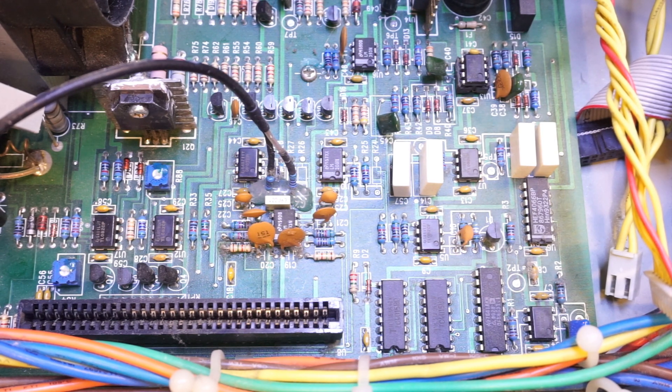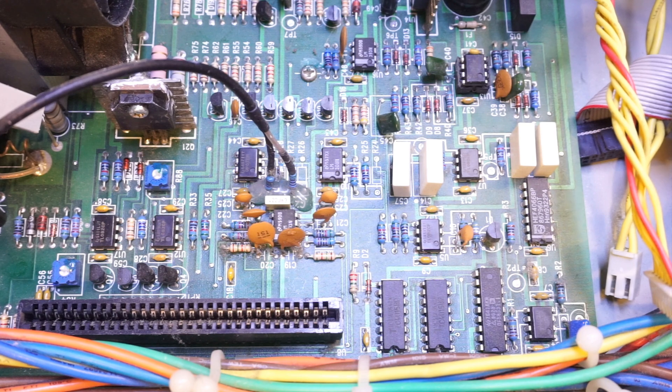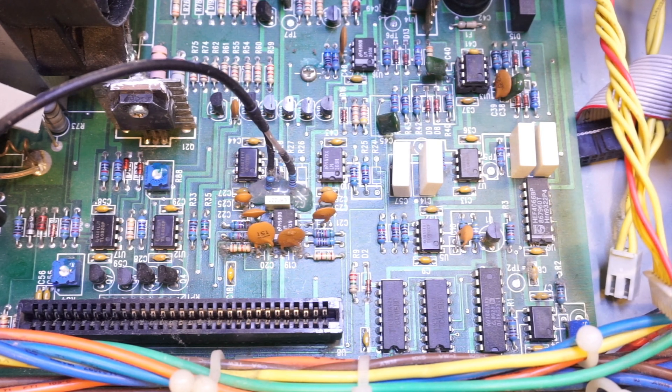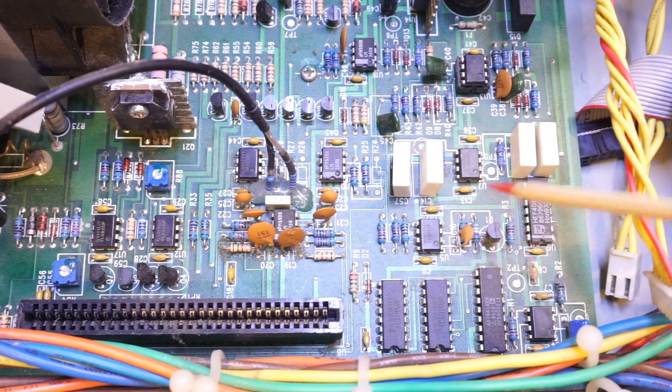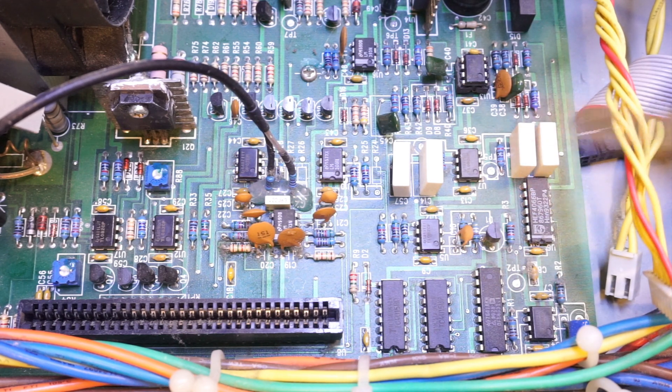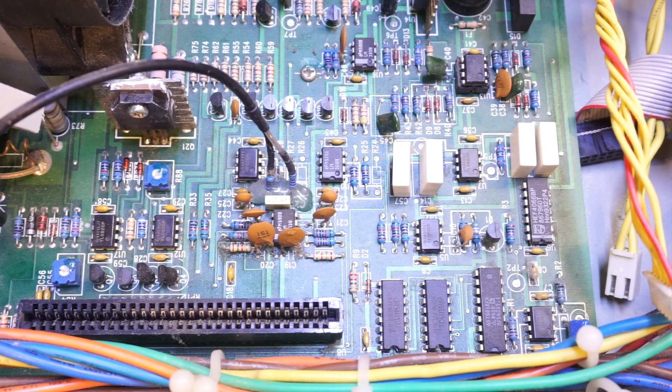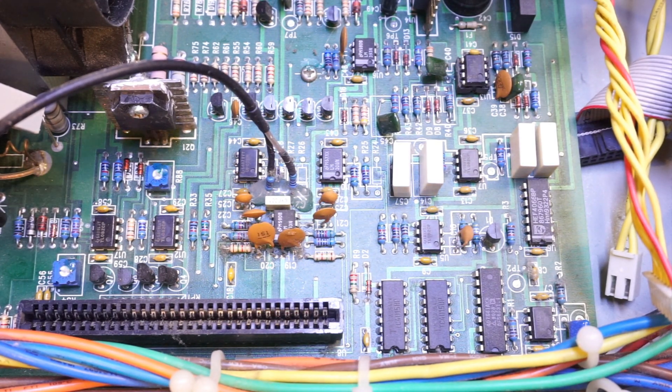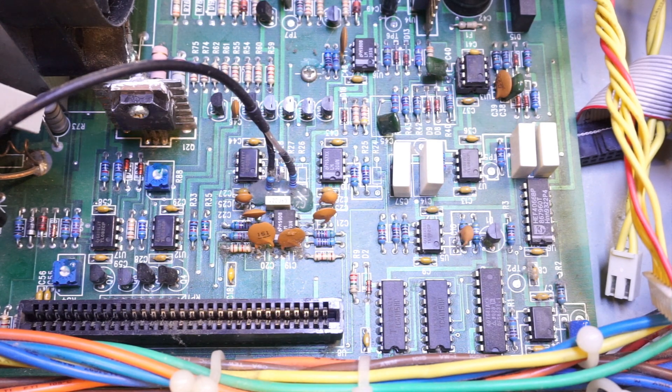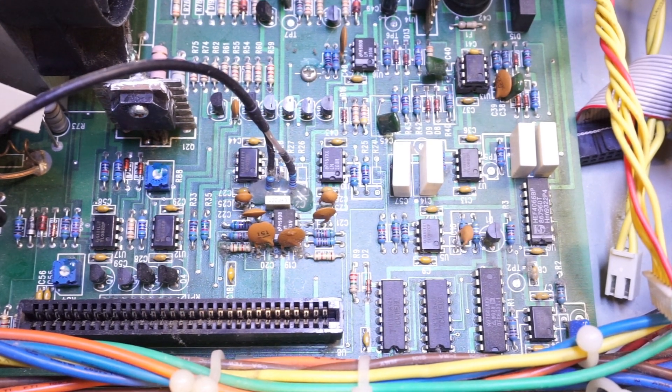This one right here is an Analog Devices AD7541, which is a 12-bit DAC. This is really nothing special either. We can deduce the DAC used in this unit by the voltage output resolution and current resolution this unit has. We kind of already knew it has a 12-bit DAC, but now we know the exact DAC they're using is an AD7541.